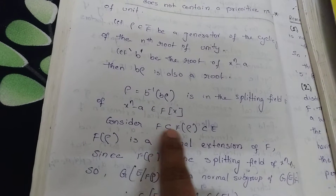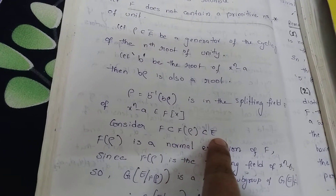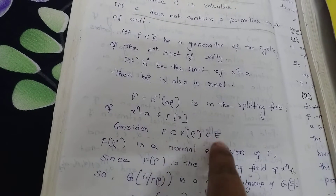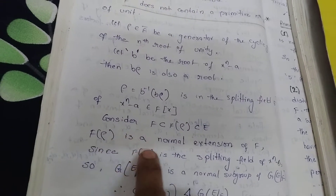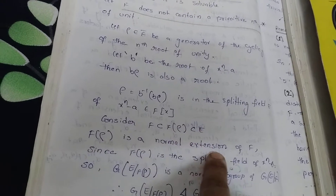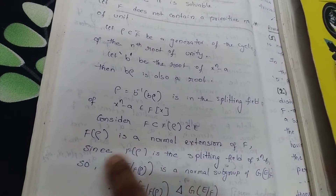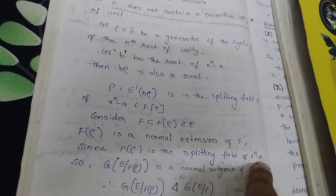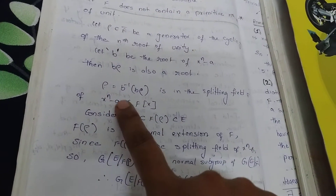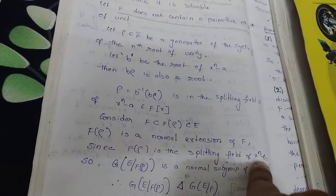Let us consider the field tower: F ⊆ F(ρ) ⊆ E. That is, F is contained in F(ρ), and F(ρ) is contained in E. Since F(ρ) is the splitting field of x^n minus a, F(ρ) is a normal extension of F. So F(ρ) is a normal extension of F.